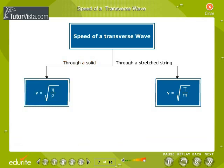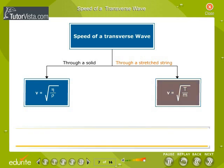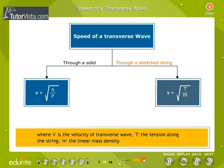Speed of transverse waves through a stretched string is given by the relation V equals root of T by m, where V is the velocity of transverse wave, T the tension along the string, m the linear mass density.